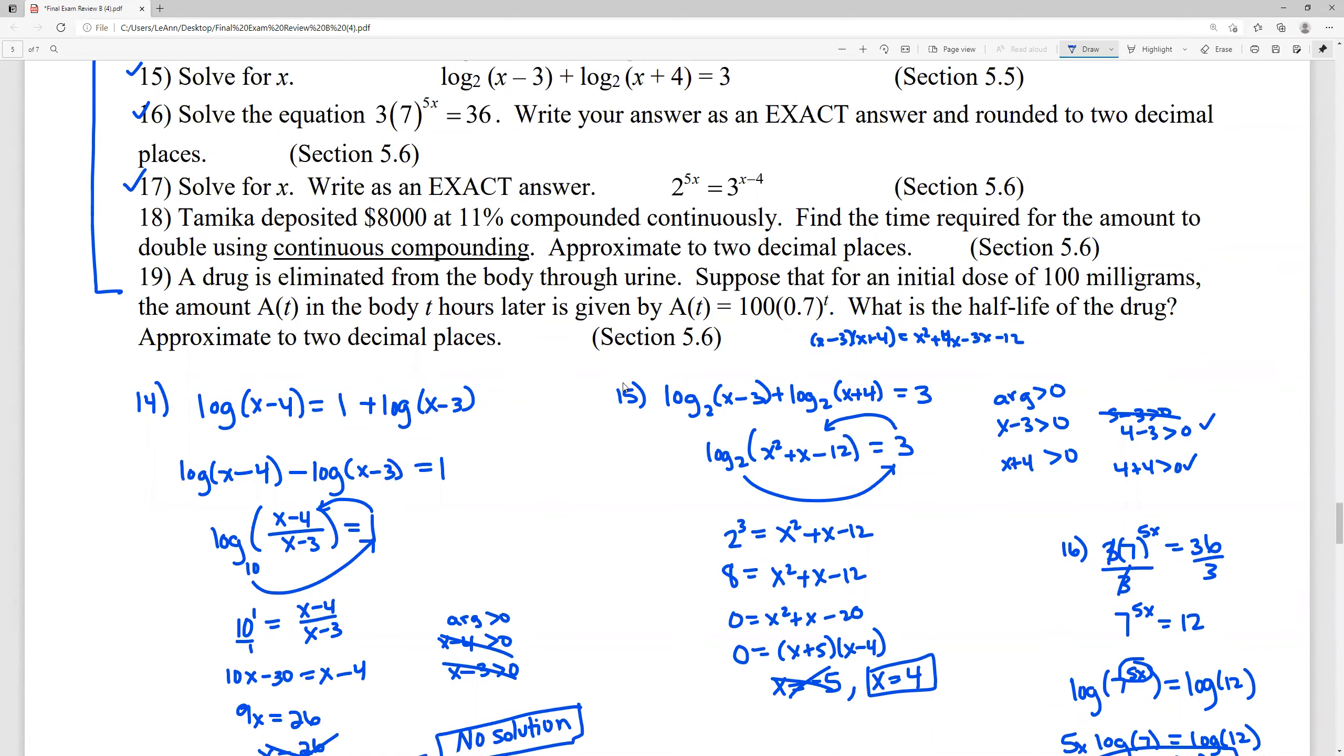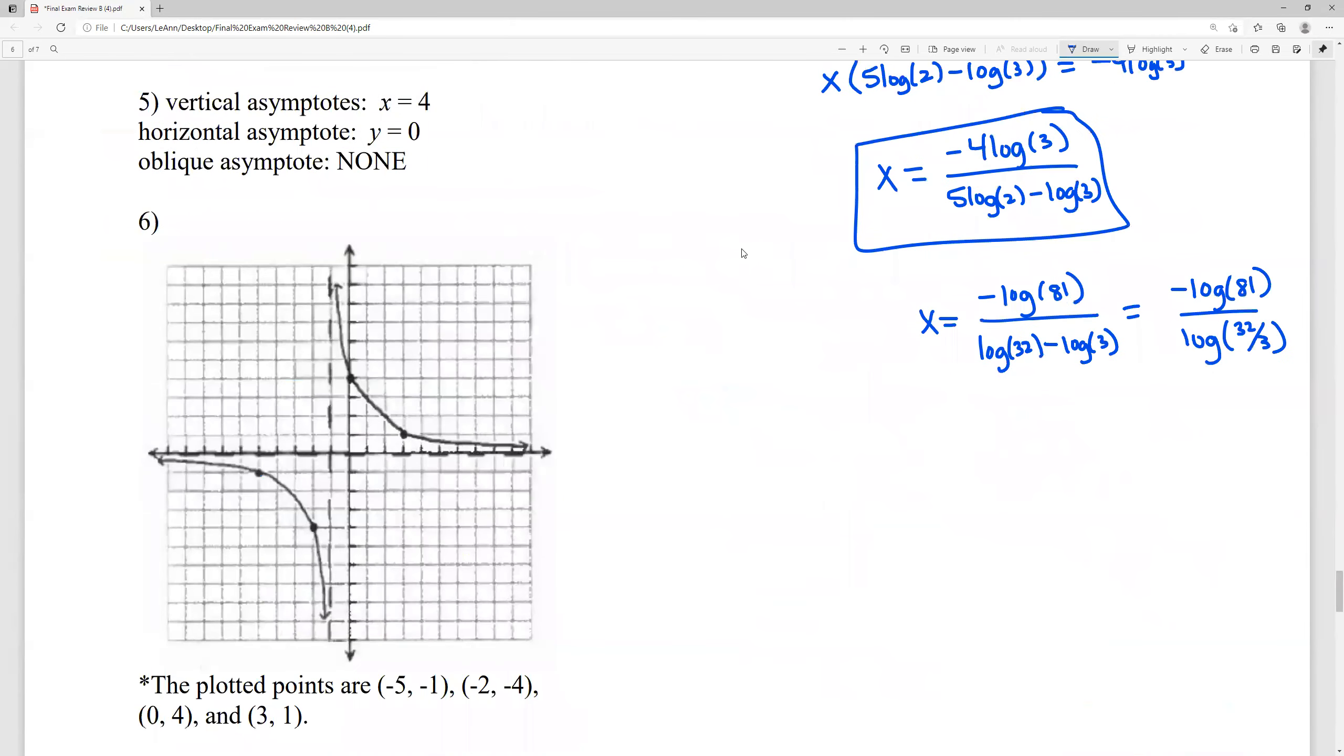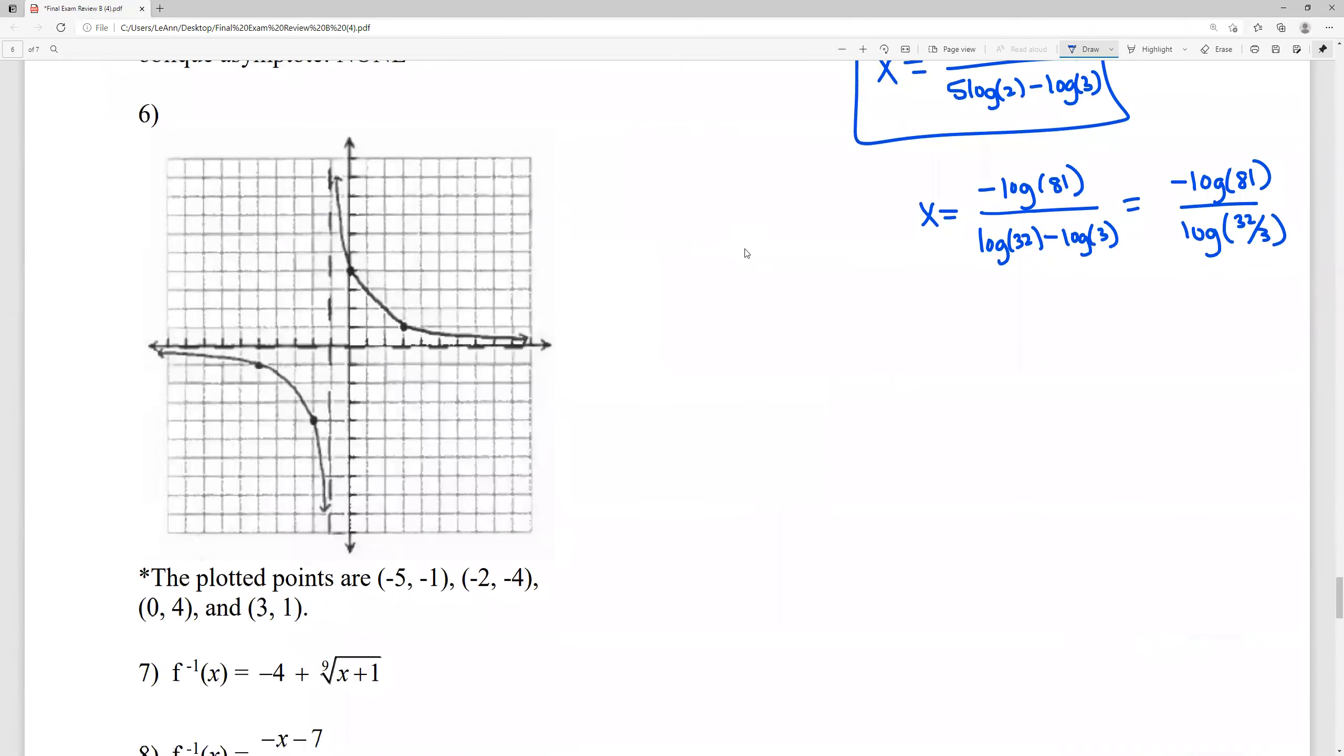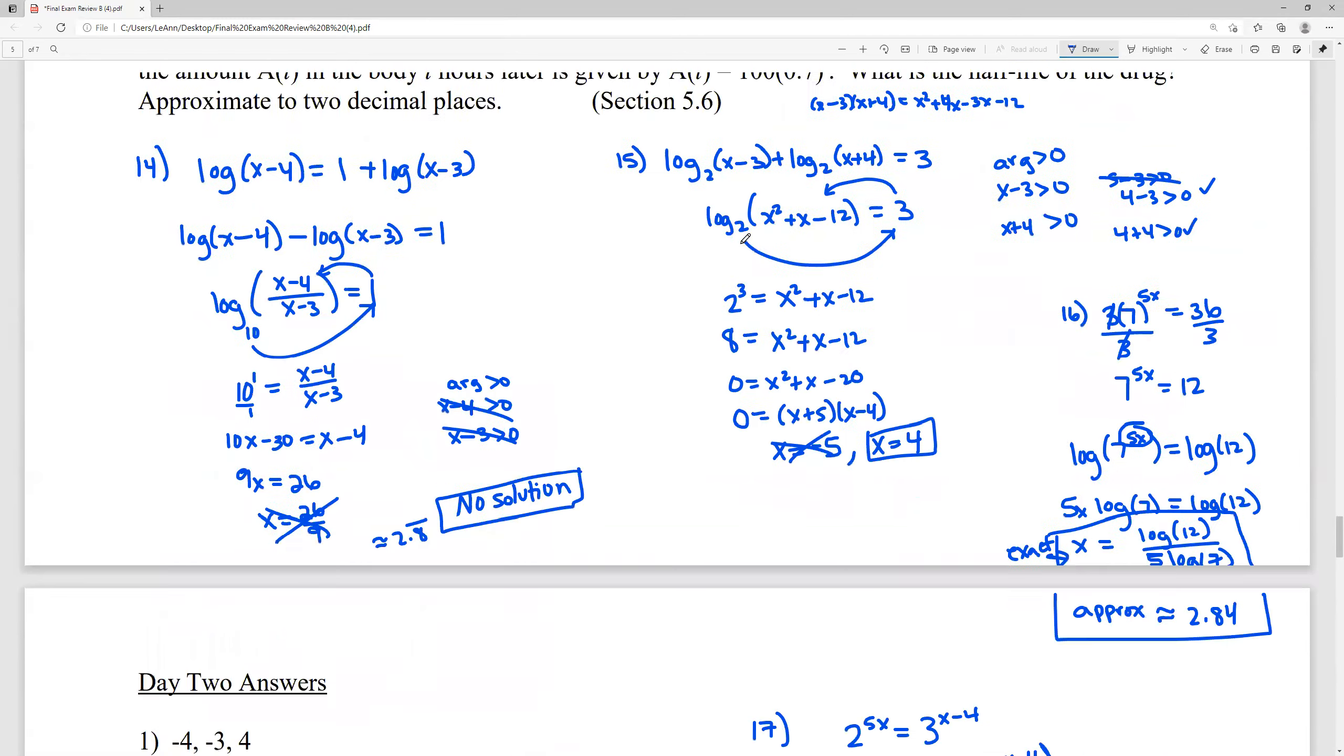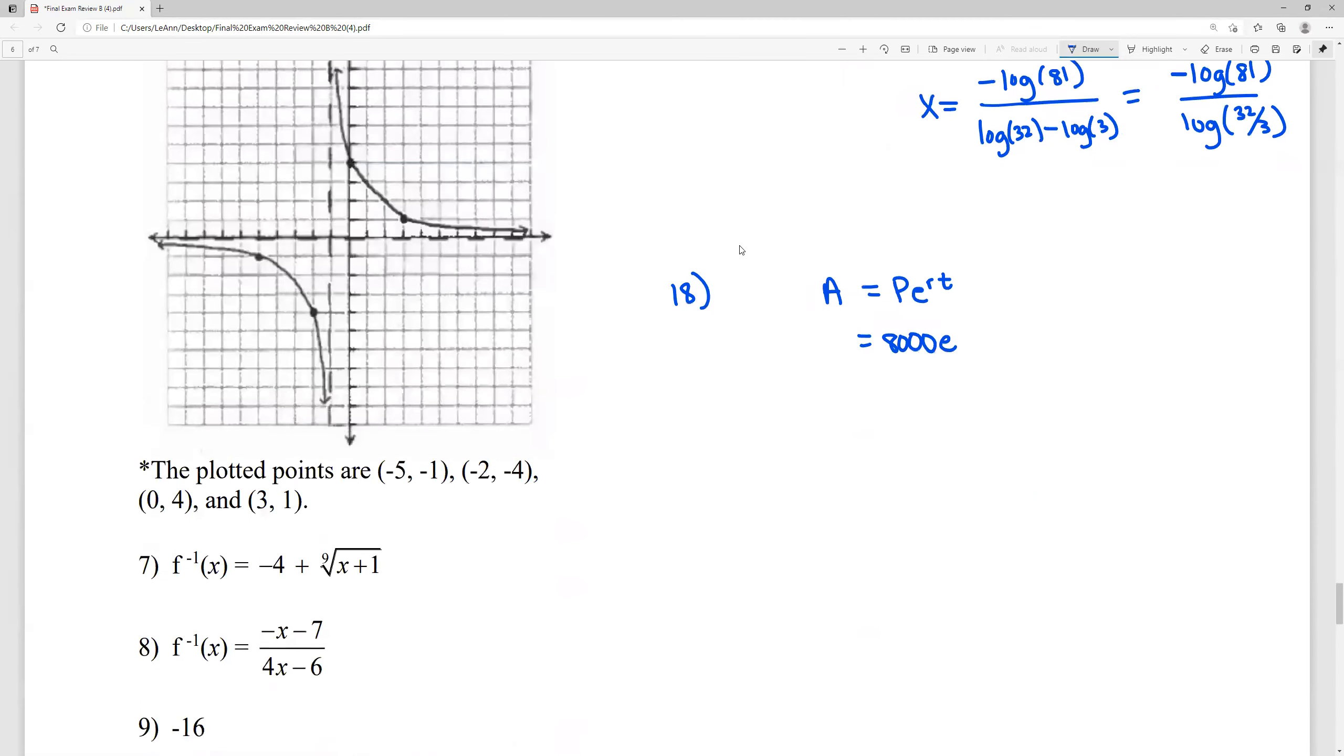We have two more, and they're both the word problems. So Tamika deposited $8,000 at 11% compounded continuously. That means we're using our PERT formula, P times E to the RT. Find the time. So we're going to be solving for time. Required to double her money using continuous compounding. Approximate to two decimal places.